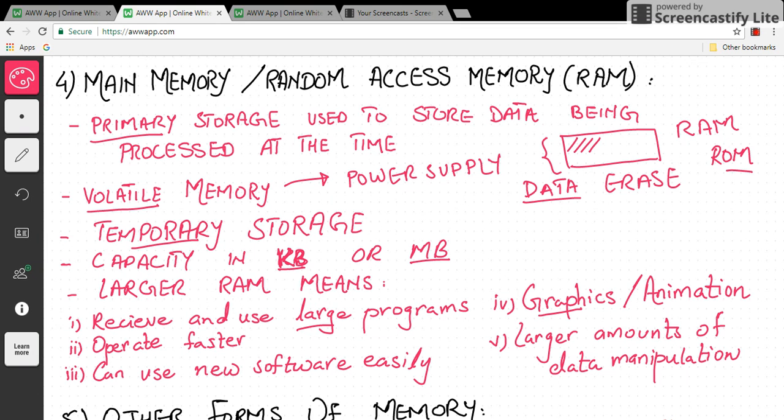Graphics and animation use a lot of memory. We need large amounts of RAM for graphics and animation work. The more RAM we have, the faster we will be able to process and manipulate data.